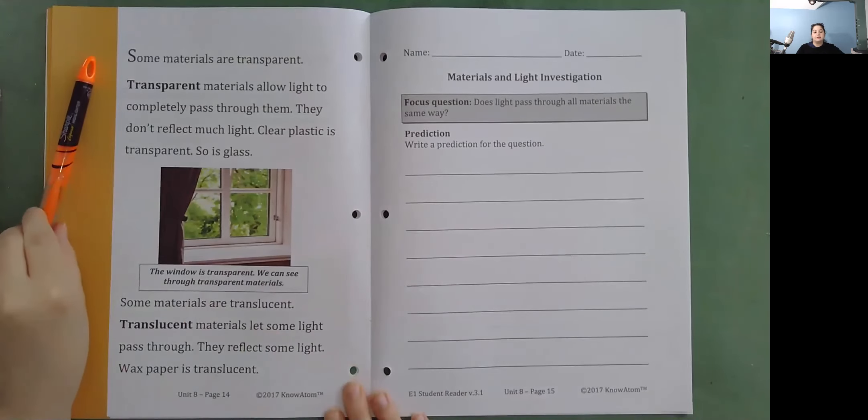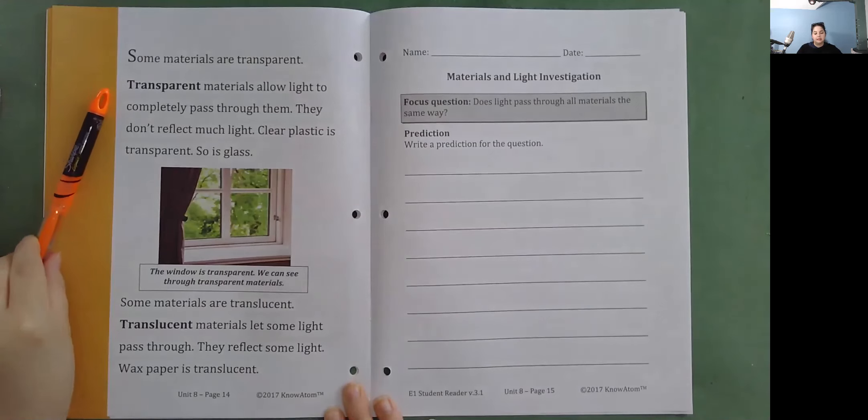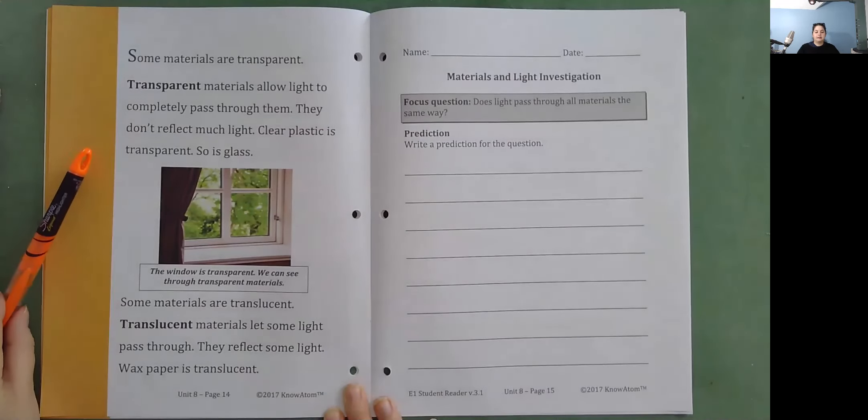Some materials are transparent. Transparent materials allow light to completely pass through them. They don't reflect much light. Clear plastic is transparent. So is glass.